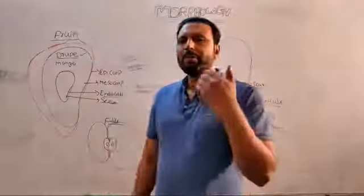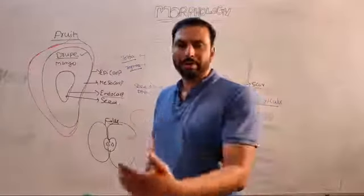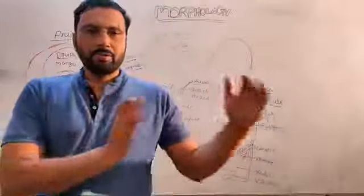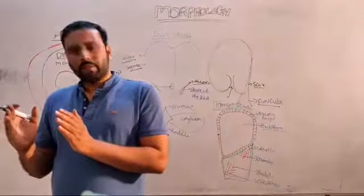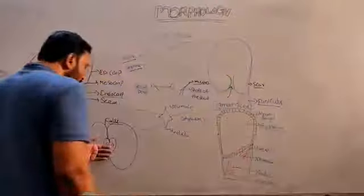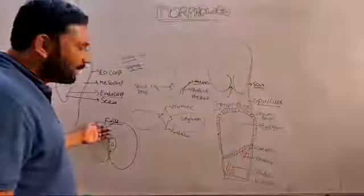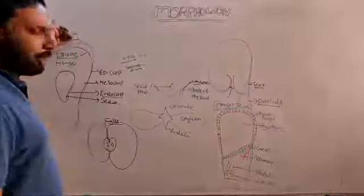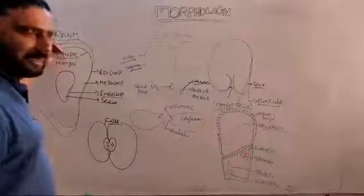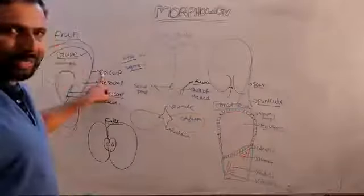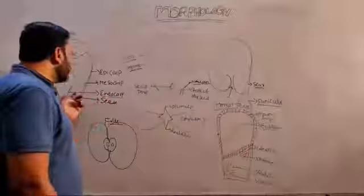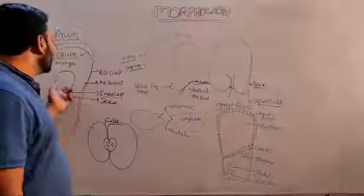In angiosperms, after fertilization the ovary develops into fruit and the ovule develops into seeds. Fruits are two types: false fruits and true fruits. False fruits develop from parts other than the ovary along with the ovary — example apple, where the true fruit develops from the ovary and the false fruit from the thalamus. True fruit example: mango, called a drupe. The drupe has a fleshy fruit wall with epicarp (outer), mesocarp (middle), and endocarp (inner, stony) layers; inside the stony endocarp seeds are present.